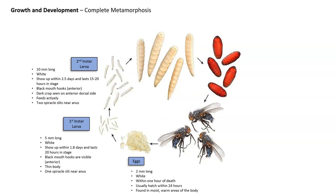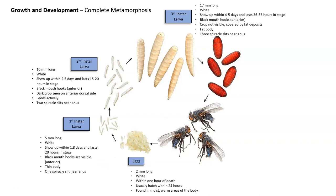The second instar larvae develop into third instar larvae. They are now 17 millimeters long, still white, and show up within 4 to 5 days of death, lasting roughly 36 to 56 hours in this stage — so about a week after death. They have black mouth hooks visible on the anterior side, a crop that is no longer visible because it's covered by fat deposits, a fat body, and three spherical slits near the anus.